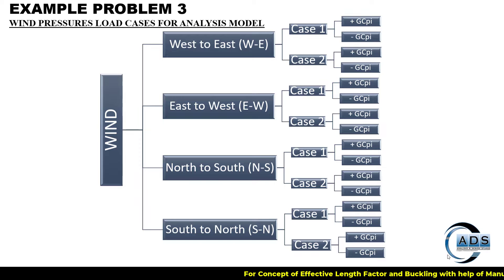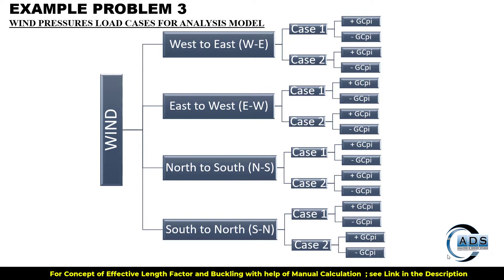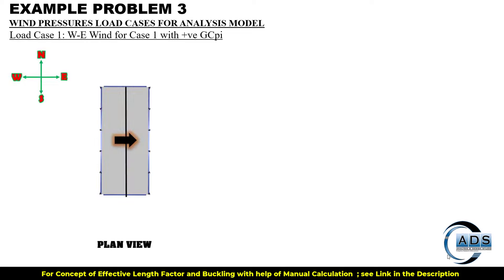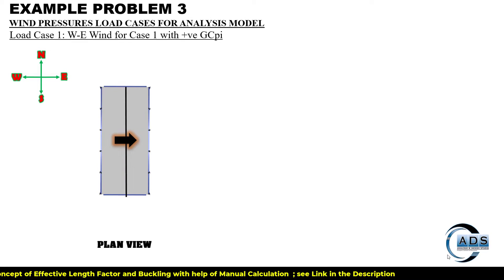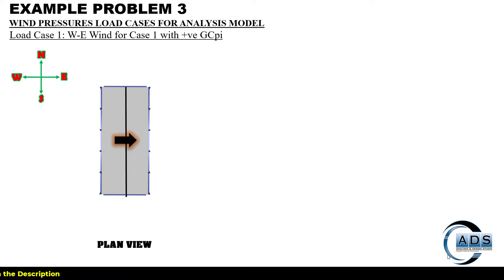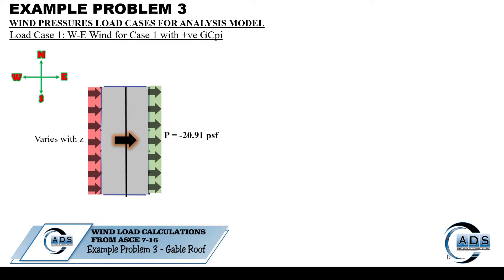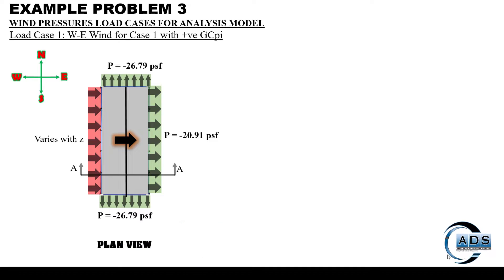Now for the wind pressure load cases combining all surface pressures, let's take a graphical representation. This is load case 1 when wind is blowing from west to east with positive GCpi. This shows the plan of the building, the windward wall pressure which varies with z, the leeward wall pressure, and the side wall pressures.